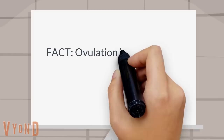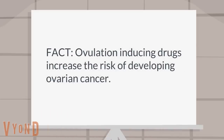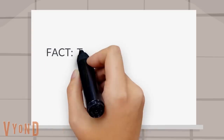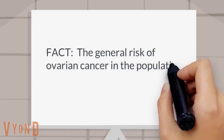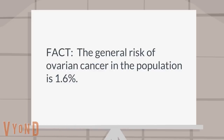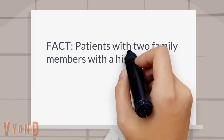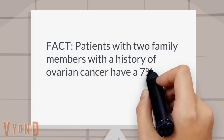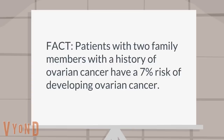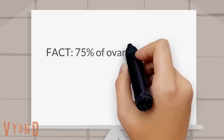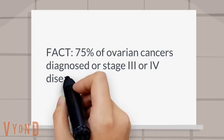Fact: Ovulation-inducing drugs increase the risk of developing ovarian cancer. Fact: The general risk of ovarian cancer in the population is 1.6 percent. Fact: Patients with two family members with a history of ovarian cancer have a 7 percent risk of developing ovarian cancer. Fact: 75 percent of ovarian cancers diagnosed are stage 3 or 4 disease.